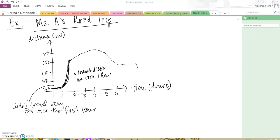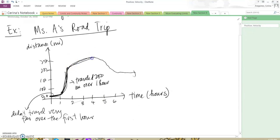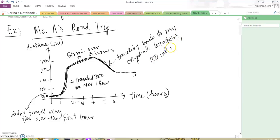As you can see, I started decreasing in distance. I'm starting to get closer to my original location. Instead of traveling away from my original location, I'm traveling towards it, traveling back. And I travel pretty far, about 100 miles in two hours.